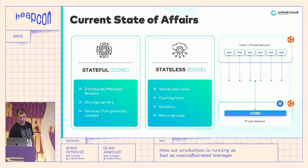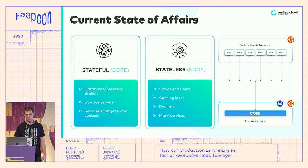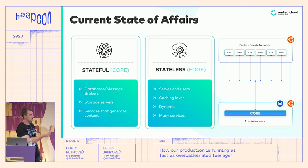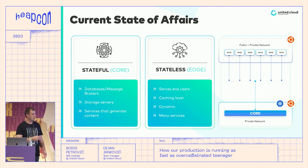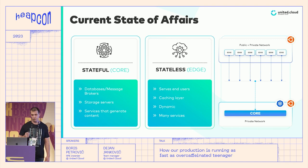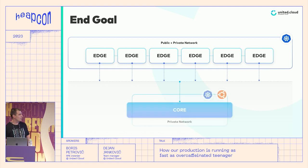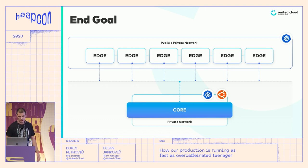On our edge locations we are currently running Ubuntu on bare-metal machines. This design was set up around six or seven years ago when we were starting with EON and had literally two Java-based services running on those servers. Now the situation is different — we have to host more than 30 services and microservices on our edge locations. Running them on Ubuntu is definitely not the best approach, so what we want to do is push Kubernetes to our edge locations.